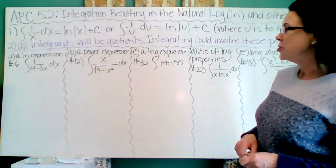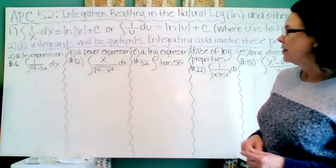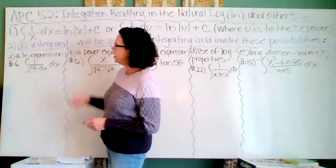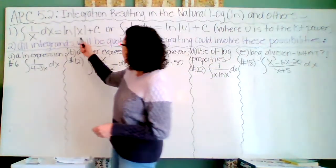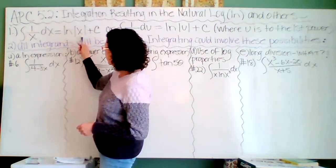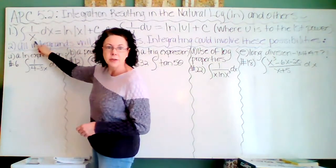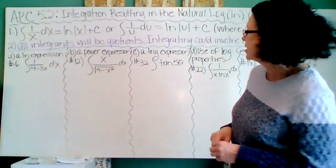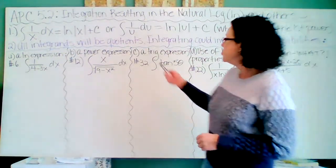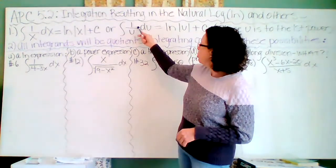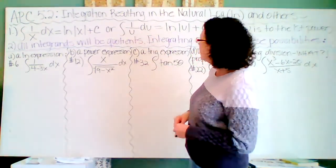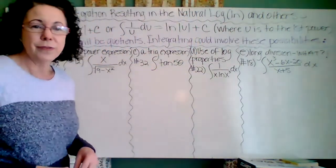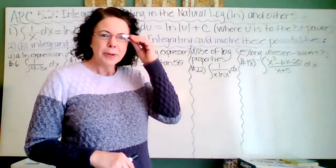The integration of 1 over x dx is the natural log of the absolute value of x. We know the domain of the natural log of x has to be greater than 0, which is why we have the absolute value. With u-substitution, the integration of 1 over u du is the natural log of the absolute value of u plus C, where u is to the first power.